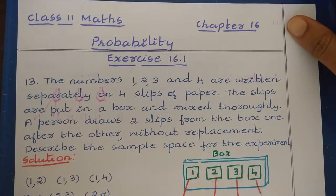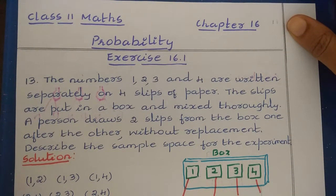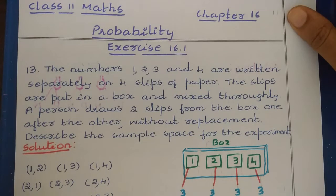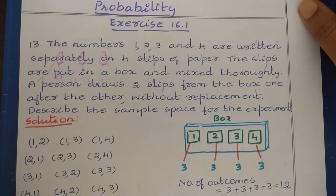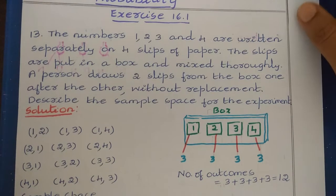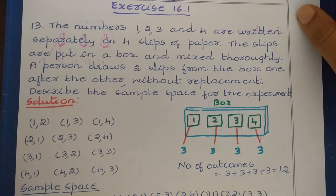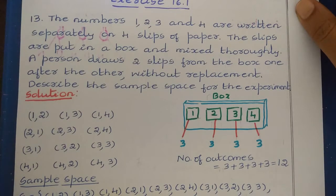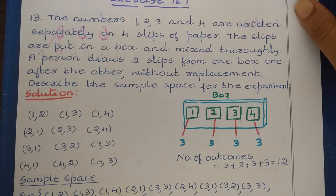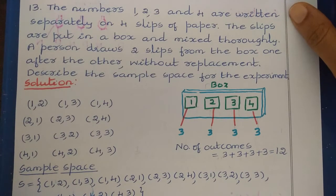Hi, welcome to the channel NCRT Maths Tutor. In this video, we will discuss Class 11 Mathematics Chapter 16 Probability, Exercise 16.1, Question No. 13 to 16 Solution. Question No. 13: The numbers 1, 2, 3 and 4 are written separately on 4 slips of paper. The slips are put in a box and mixed thoroughly. A person draws 2 slips from the box one after the other without replacement. Describe the sample space for the experiment.